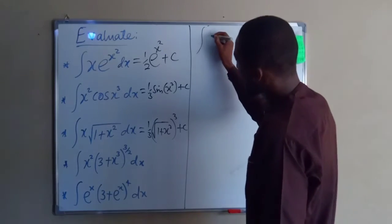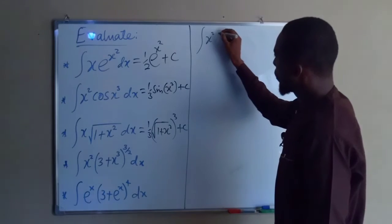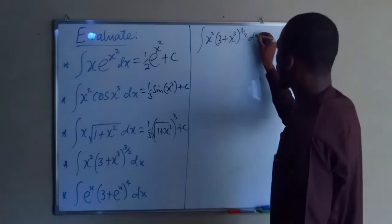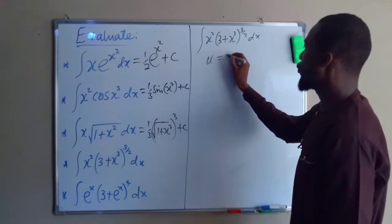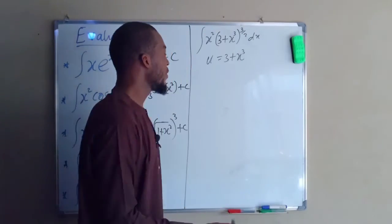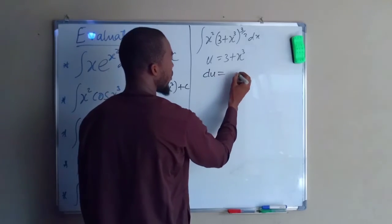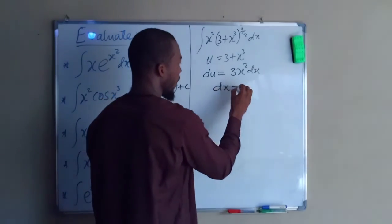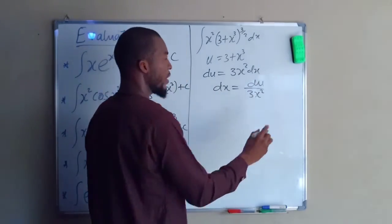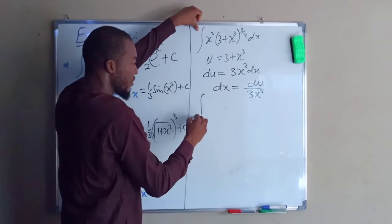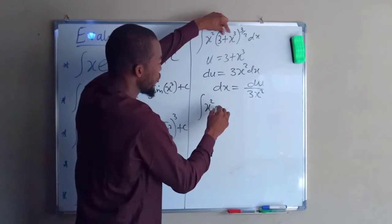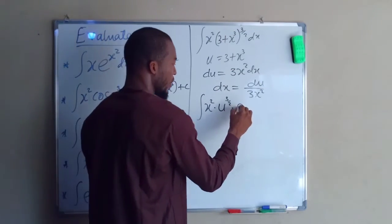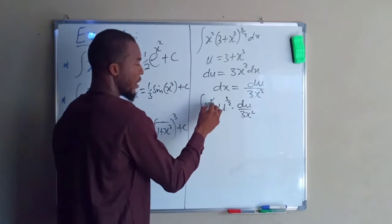Problem number 4: the integral of x squared times (3 plus x cubed) to the power of 3 over 2 with respect to x. Let u equal to 3 plus x cubed, so that du equals 3x squared dx. If you divide both sides by 3x squared, you obtain dx equal to du divided by 3x squared. Plugging this back into our integration, this becomes x squared times u to the power of 3 over 2, and dx is du divided by 3x squared. The x squared cancels x squared.